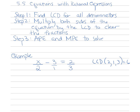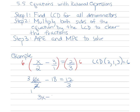Multiplying both sides of the equation by 6: 6 times x over 2 minus 6 times 3 over 1 equals 6 times 2 over 3. Reducing the fractions — 2 goes into 2 once and 2 goes into 6 three times, leaving 3x minus 18 on the left. Then 3 goes into 3 once and 3 goes into 12 four times, giving us equals 4.